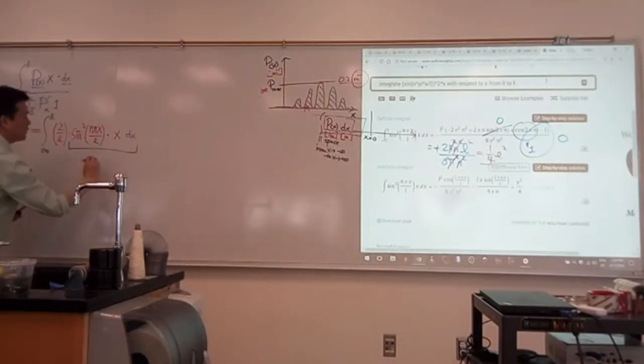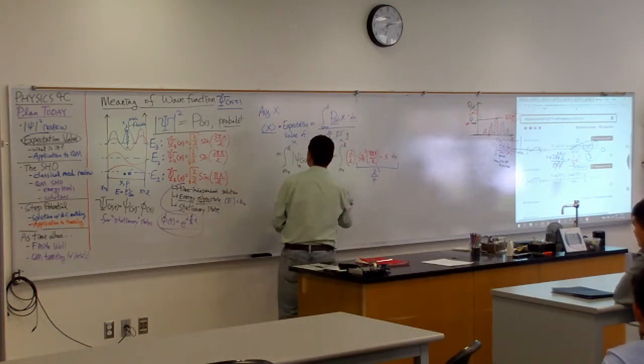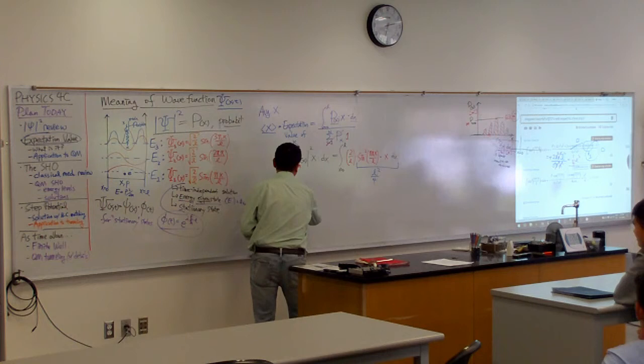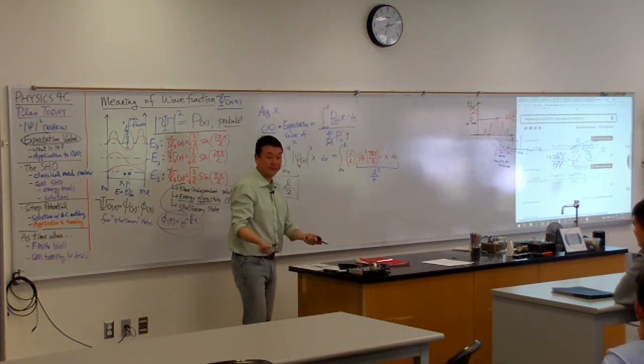So that's the result of this integral here. This integral here will give you L squared over 4. Now you multiply 2 over L and you end up with the expectation value of L over 2. Which is what we are expecting.